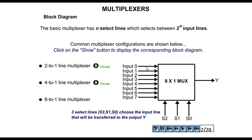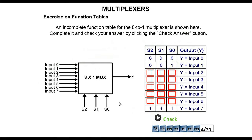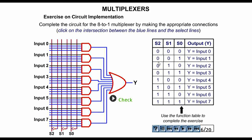For the 8-to-1 line multiplexer, the block diagram will be like this. It has eight input lines, three selection lines, and only one output line. The truth table for the 8-to-1 line multiplexer shows the selection line combinations: 0 0 0, 0 0 1, 0 1 0, 0 1 1, 1 0 0, 1 0 1, 1 1 0, 1 1 1. For input 0, the selection line should be 0 0 0.